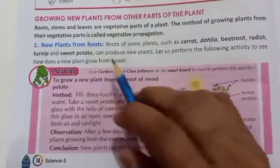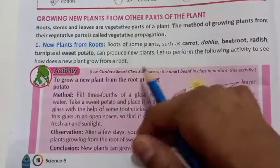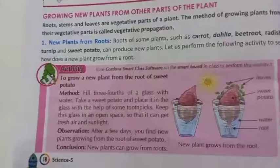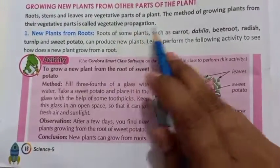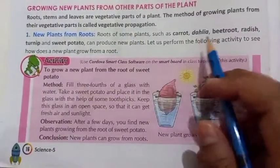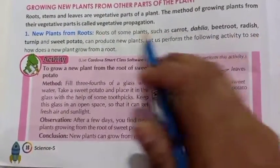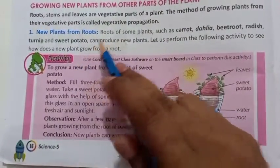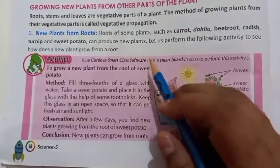Now come to new plants from roots. Roots के ज़रिये जो नया पौदा बनता है उसको देखते हैं. Roots of some plants such as carrot, dahlia, beetroot, radish, turnip, and sweet potato can produce new plants.